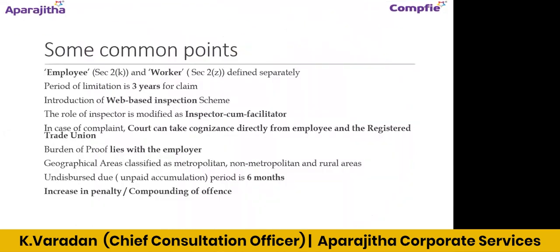When legislation requires segregating workers from employees, this definition must be followed carefully. The period of limitation is three years for any claim under the Code on Wages — whether for minimum wages, shortage in payment of minimum wages, delayed payment of wages, or shortage and delay in payment of bonus. An individual worker can make such a claim within three years.